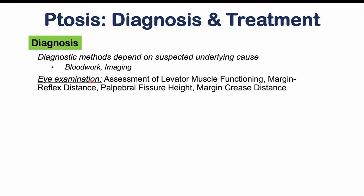Eye examination can also be performed, including assessment of levator muscle functioning, margin reflex distance, palpebral fissure height, and margin crease distance. The ice test is specifically relevant to myasthenia gravis: measure the ptosis first, then apply an ice pack to the affected eyelid for two minutes. If the ptotic eyelid has raised at least two millimeters after removing the ice, that is a positive test, suggesting ptosis due to myasthenia gravis.